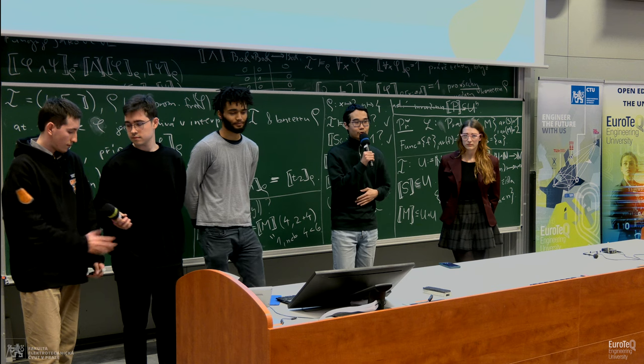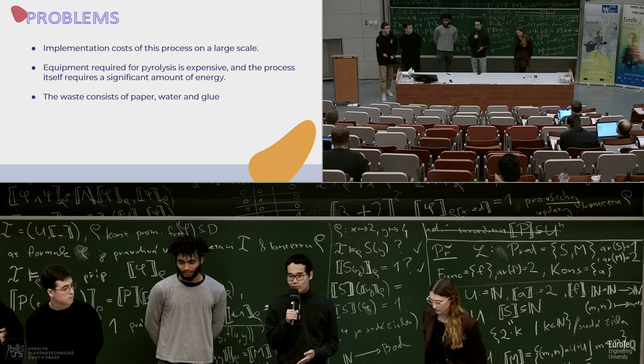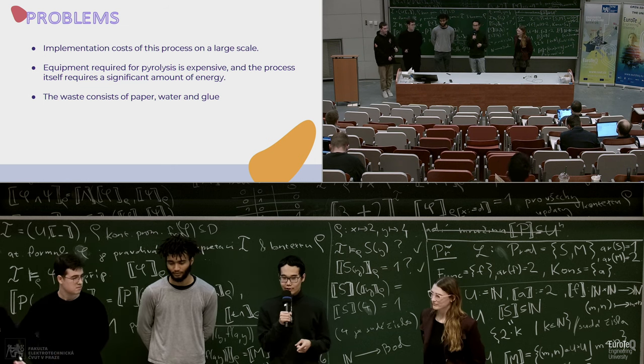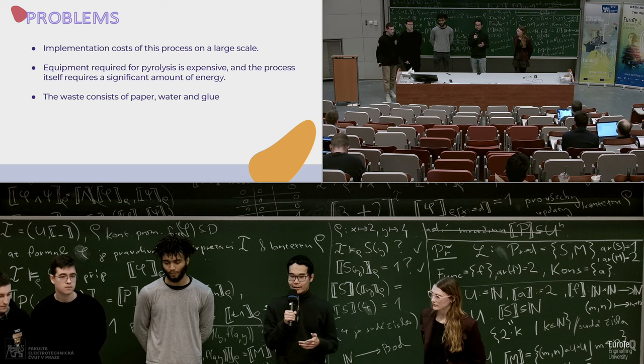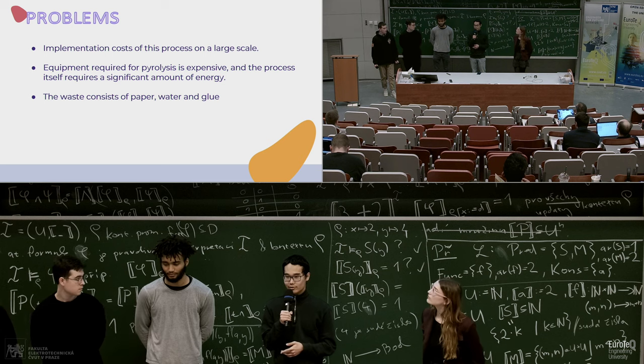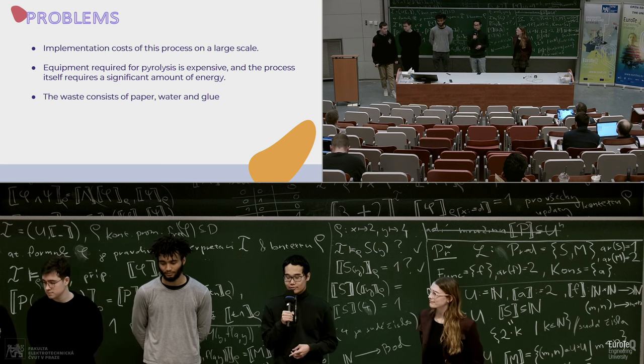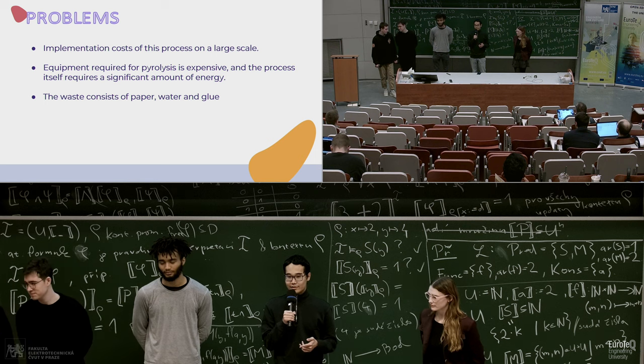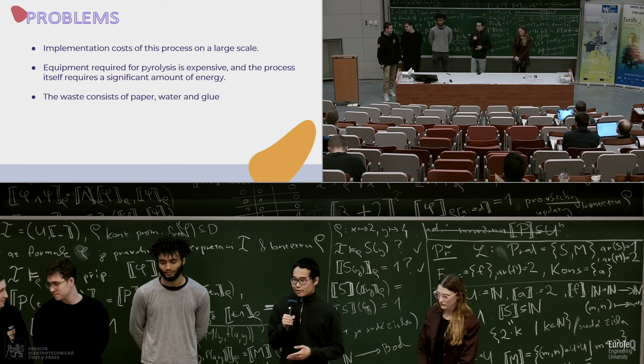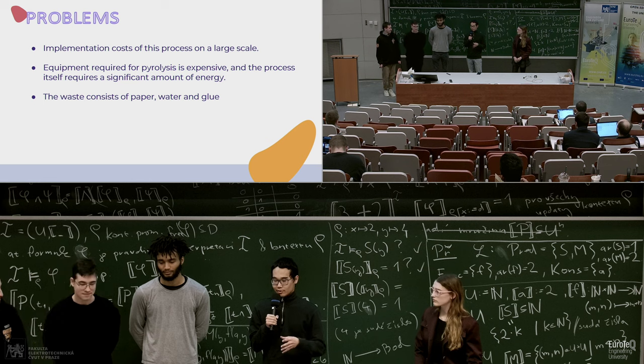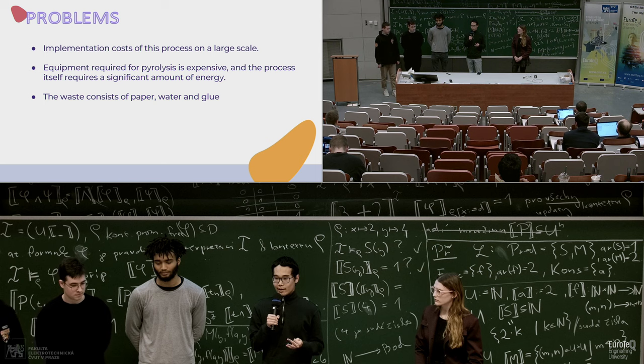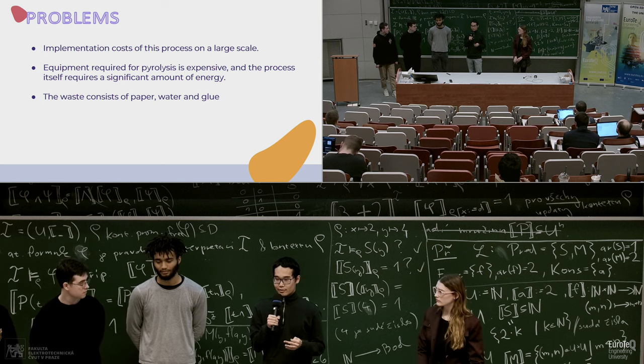Despite its numerous benefits, recycling paper through pyrolysis has challenges and problems. One major challenge is the implementation of the process on the large scale. The equipment for pyrolysis is very expensive, and the process itself requires huge amounts of energy. And another problem is, the waste consists of paper, water, and the most important is glue, and the glue can affect the efficiency of the process.